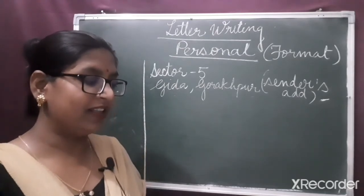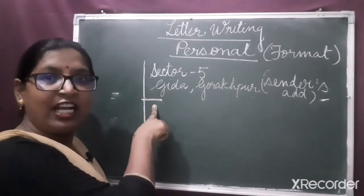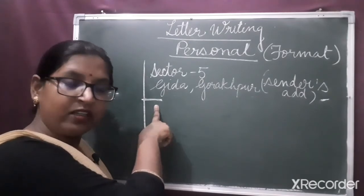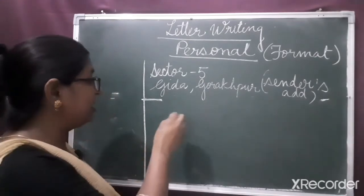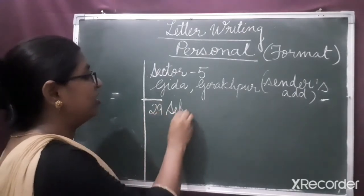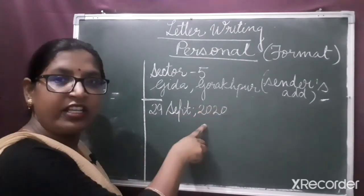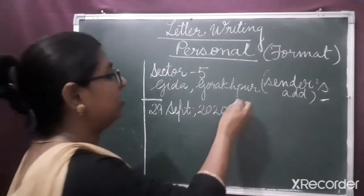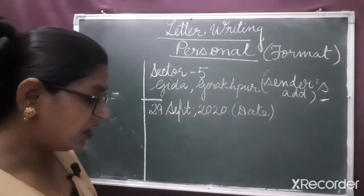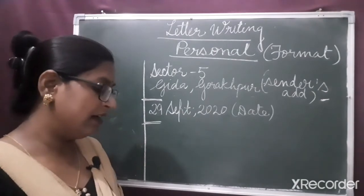After writing the sender's address, we leave one line gap. After leaving this line, you have to write the date on which you are writing the letter. Suppose you are writing this letter on 29th September 2020 — you should mention the date. Then after writing the date, again you have to leave one line.